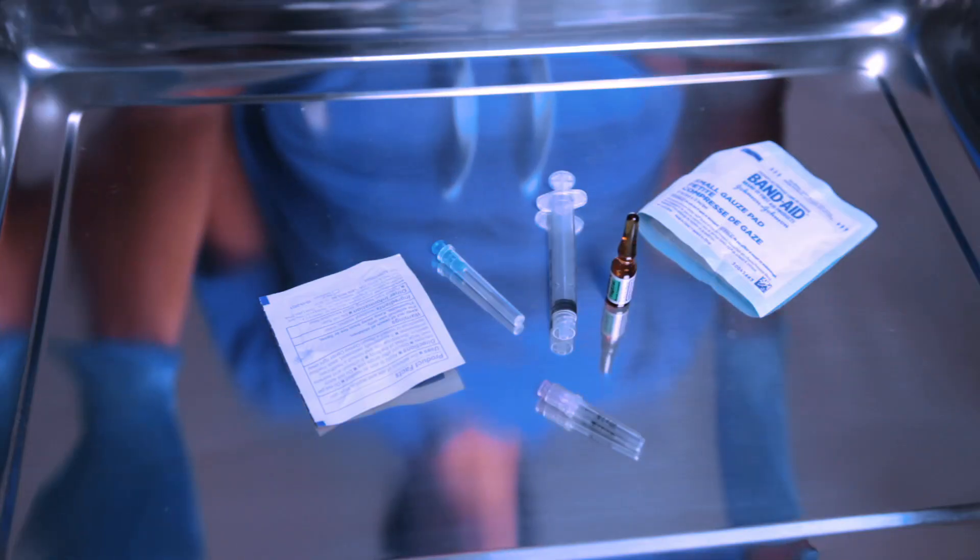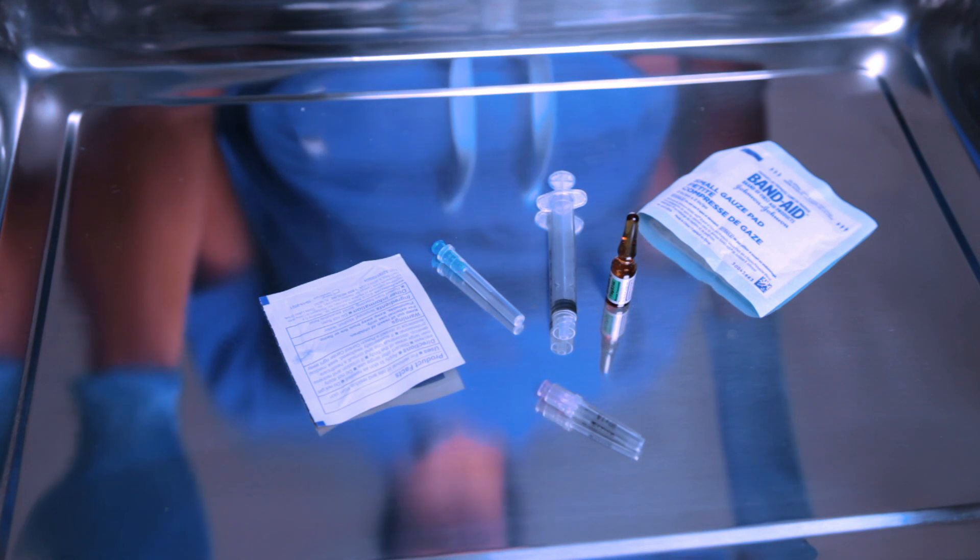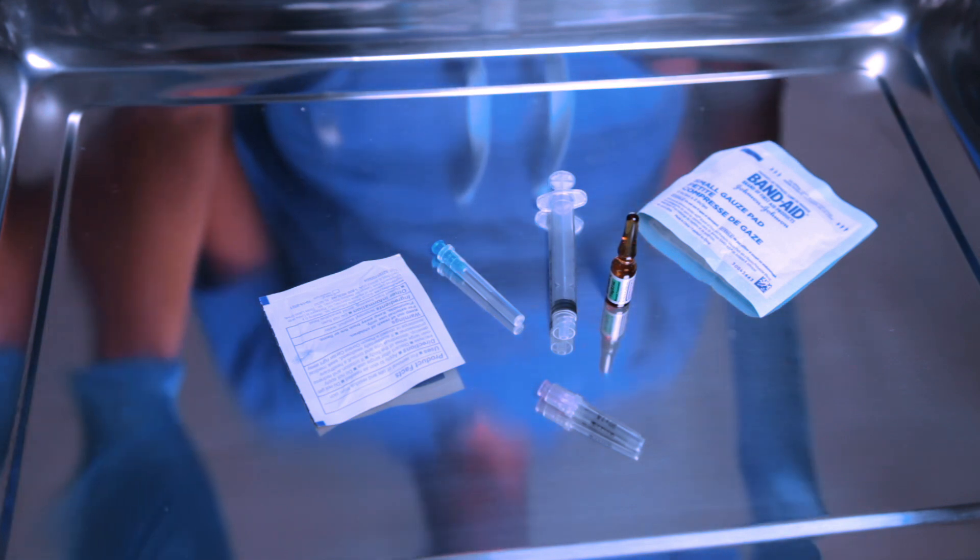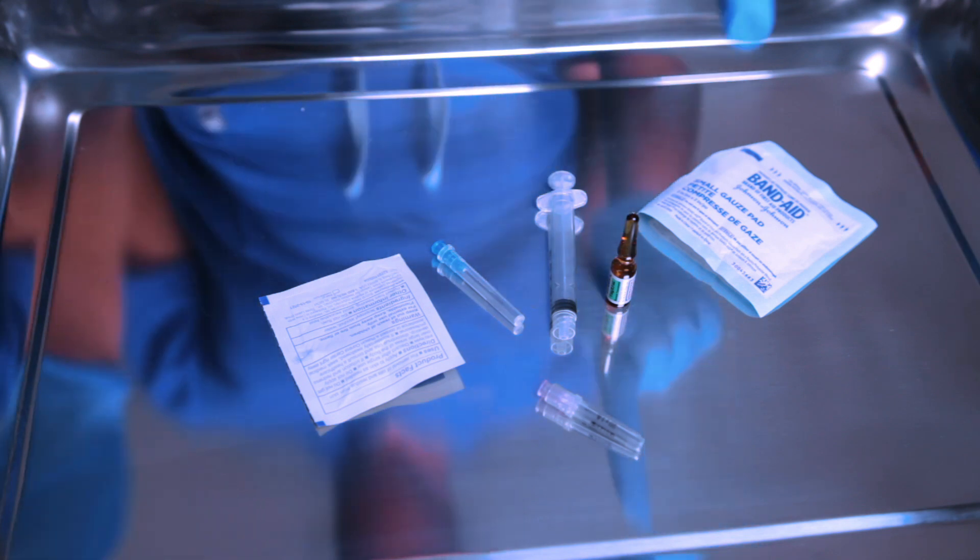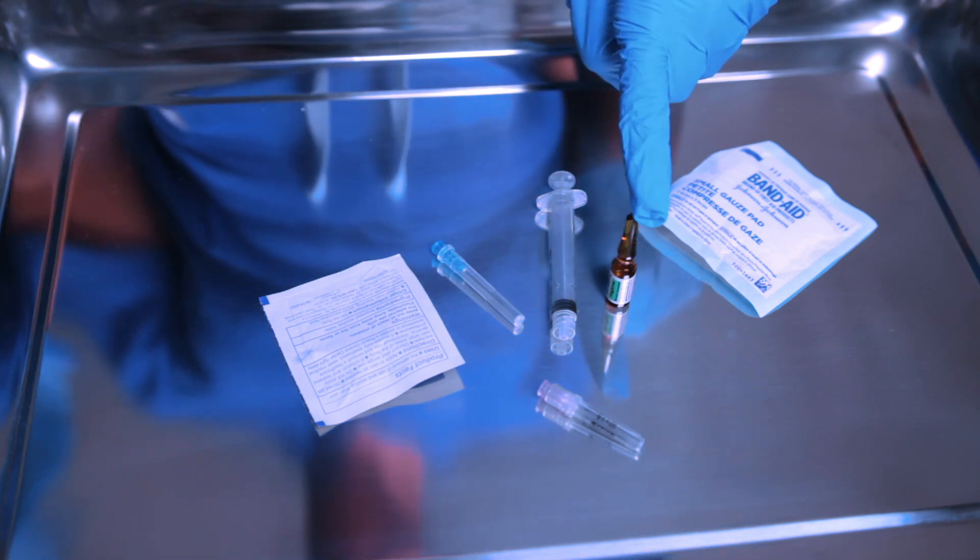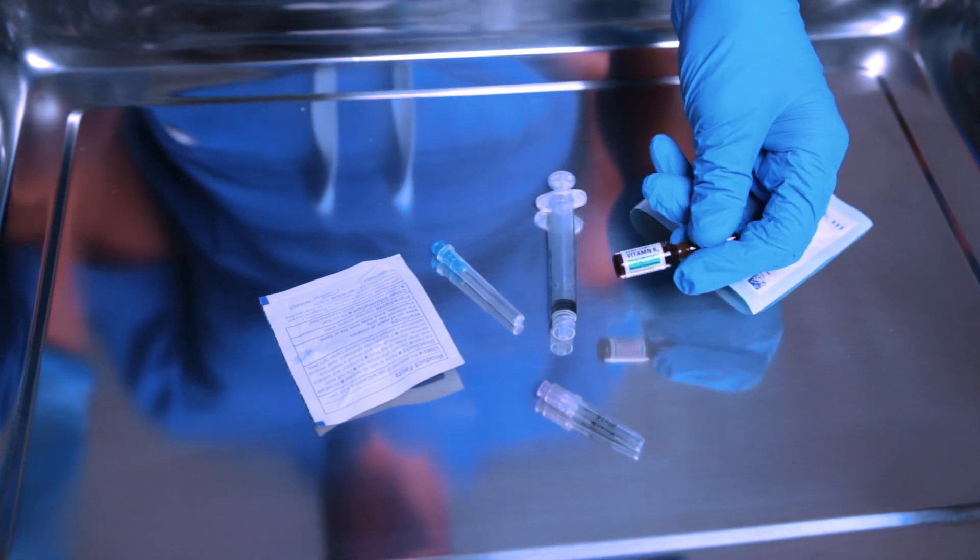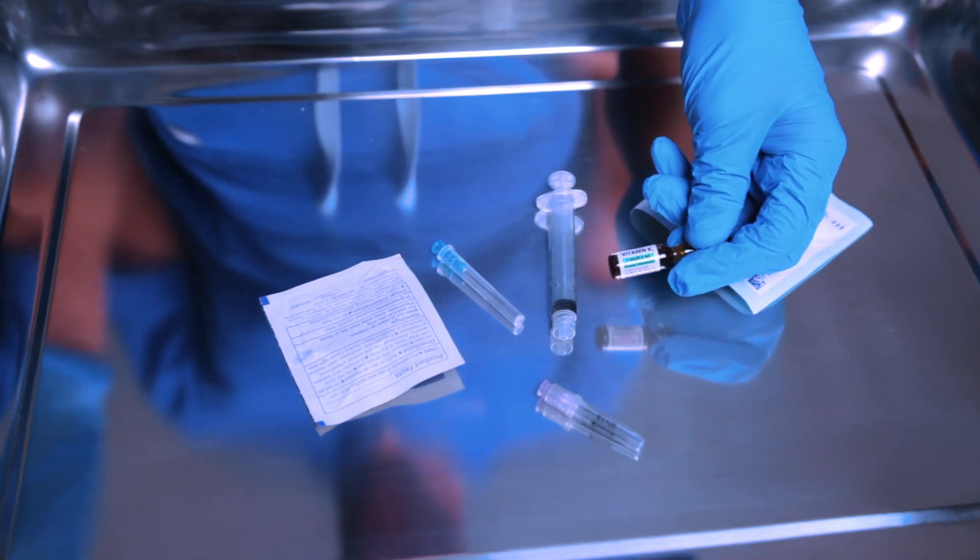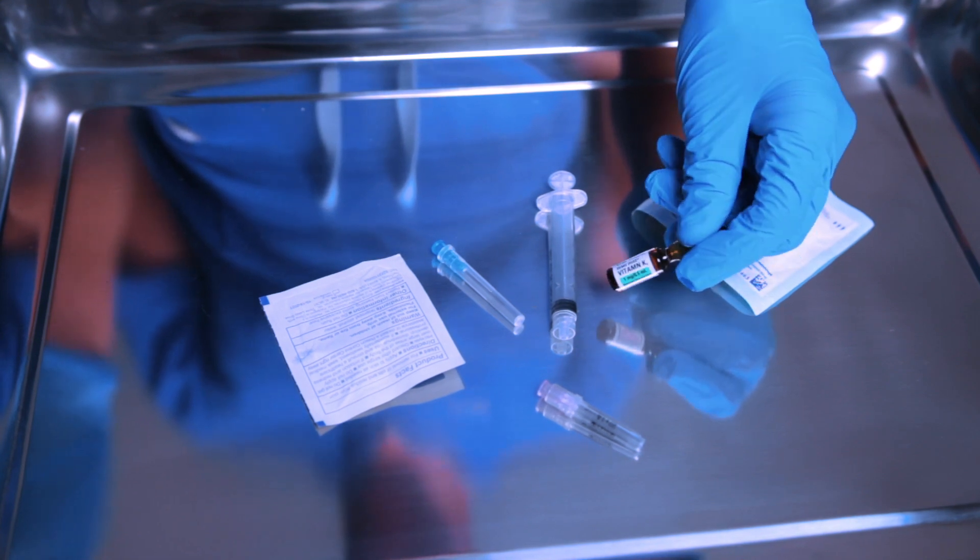So prior to administering your medication, you want to verify that you have a physical order that you will be administering the medication to your patient. You are going to gather all of your supplies. You will need your vitamin K injection. In this situation, this is going to be for your pediatric population. However, you can give it for your adult population as well. So this is dosed at one milligram per 0.5 mils.